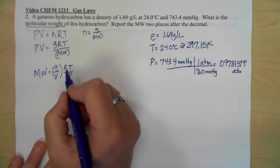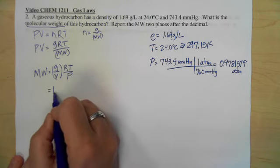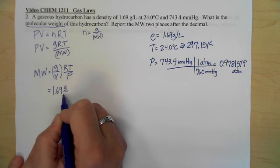Now you can write this any variety of ways. I choose to group it because we know we have our density value which is 1.69 grams per liter. We have our gas constant which is 0.08206 liter atmospheres per mole K.